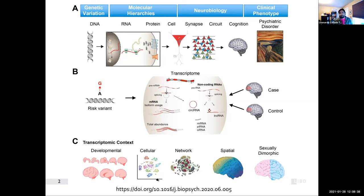The place I work at, the Liber Institute for Brain Development, is highly interested in psychiatric disorders. How can we understand more about psychiatric disorders biologically speaking? It involves multiple layers of molecular biology. The one we focus on the most is the transcriptome, which is the RNA molecules in a given cell or across cells. We can actually measure the presence of these molecules in different transcriptomic contexts.